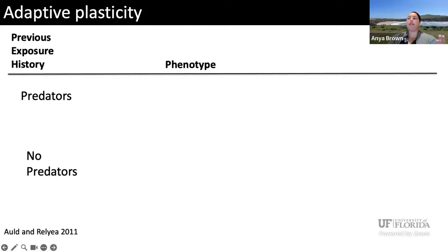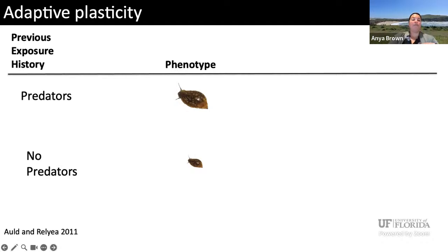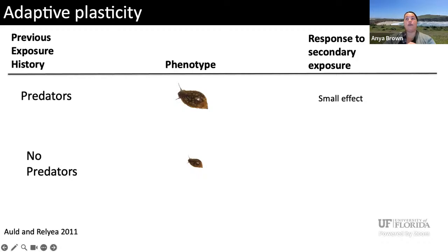Another way to think about this: does previous exposure to vermetids decrease their effect on coral? I'm really asking whether this is an example of adaptive plasticity to the presence of a stressor. To illustrate adaptive plasticity, I like this example from Agrawal and Relia 2011, where Physa acuta snails — normal-looking snails, unlike vermetids — grow larger, thicker shells in the presence of predators compared to their absence. Upon secondary exposure to their crayfish predators, we see a small effect on those previously exposed and a large deleterious effect on survival for those that had not been previously exposed.